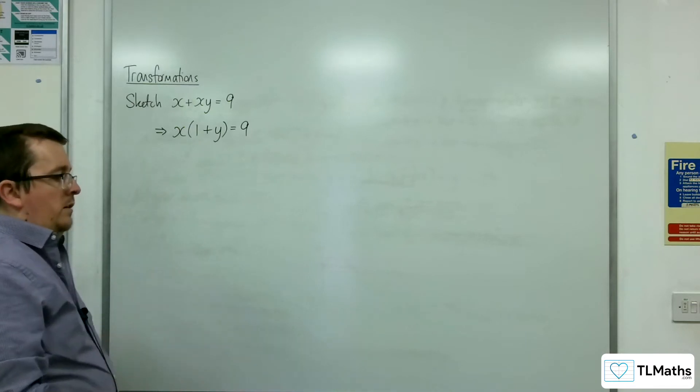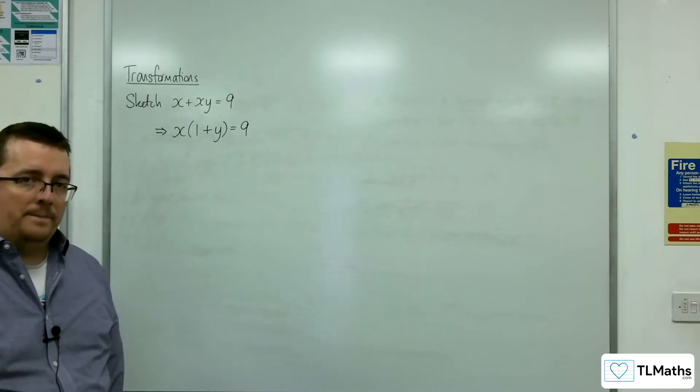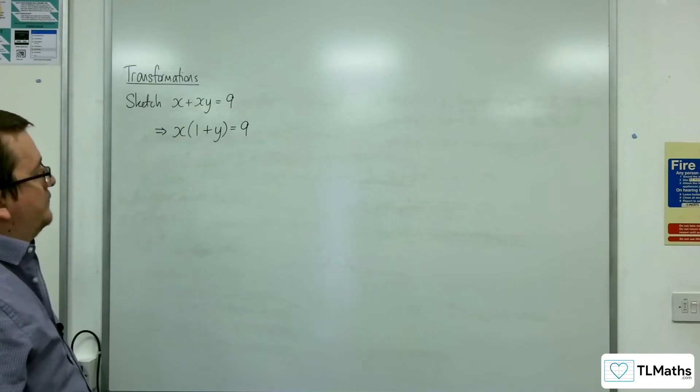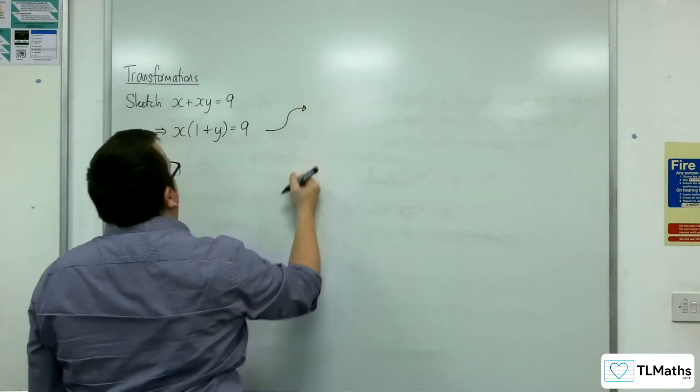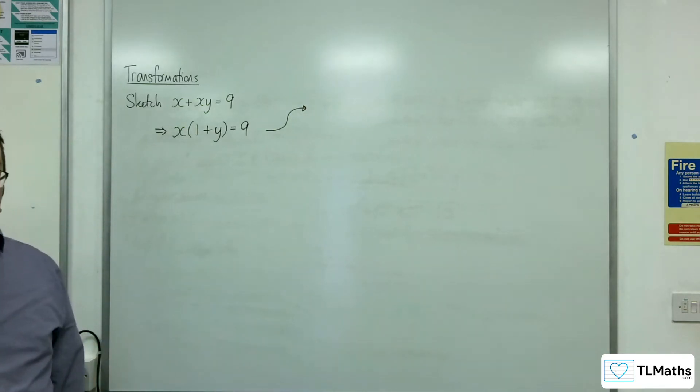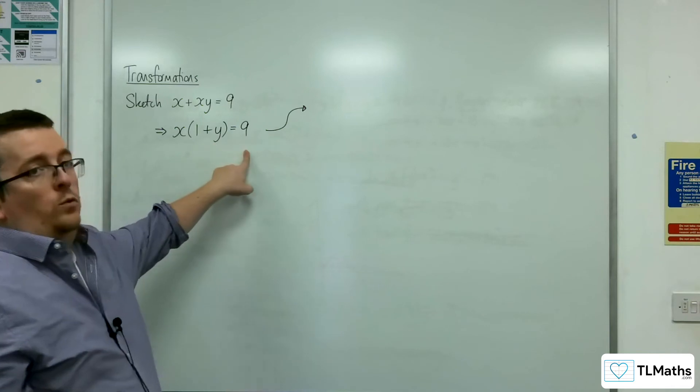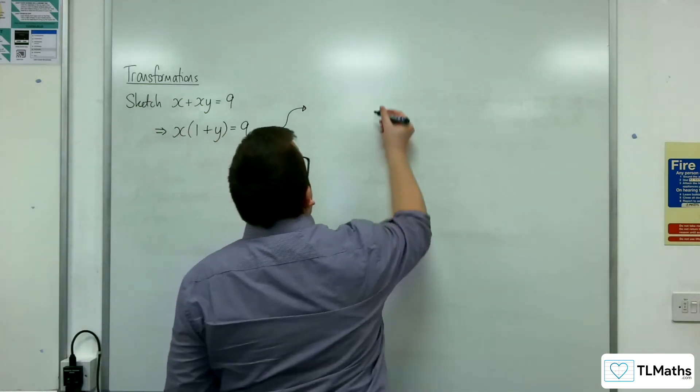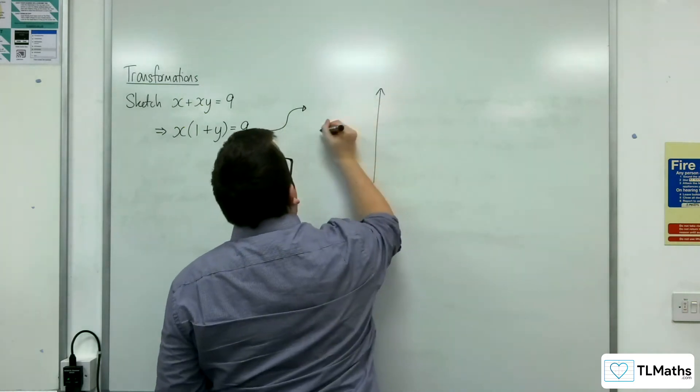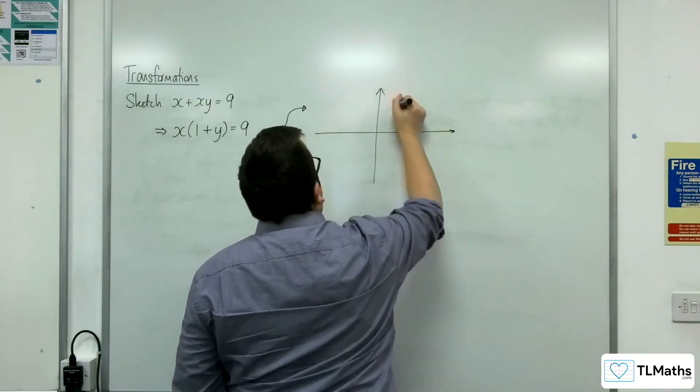Now there are alternatives to that. So if you wanted to go straight from this, then the way to go about that is to recognize that you've got xy equals 9. It's of that form. So that's telling you the shape is going to look like this.